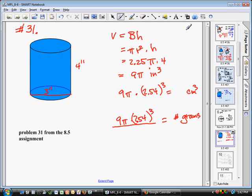And so, I plug it in, 2.25 times pi, times the height, 4, gives me 9 pi cubic inches. So, there's the volume in cubic inches. Now, I've got to do some conversions here, don't I? In order to get it in cubic centimeters, I need to multiply by 2.54 cubed. Why? Because in each linear inch, there are 2.54 centimeters. But this is cubic inches. So, it's 2.54 times 2.54 times 2.54.